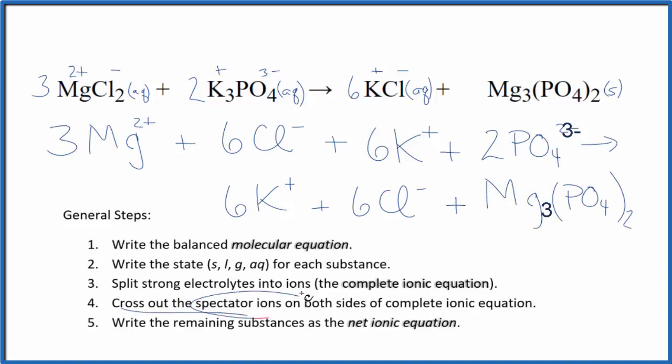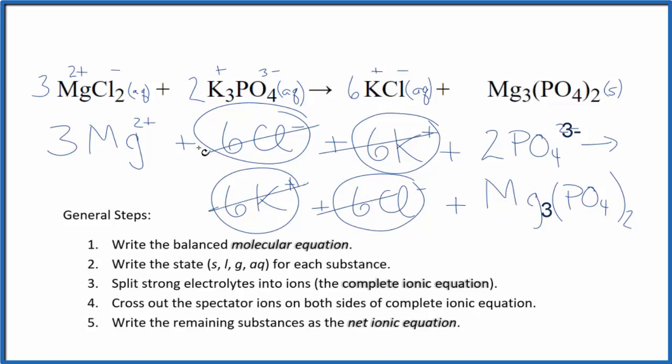Now we can cross out the spectator ions. They're on both sides. So we see we have 6 chloride ions, 6 chloride ions in the products. Get rid of those. In the reactants, 6 potassium ions, and in the products. Get rid of those. What's left is the net ionic equation for MgCl2 plus K3PO4. I'll clean this up and write the states. We'll have our net ionic equation.